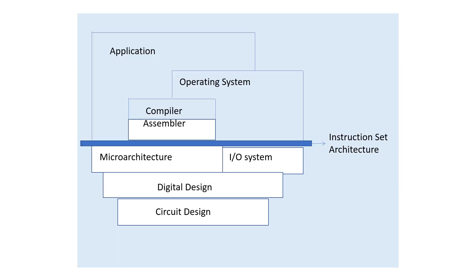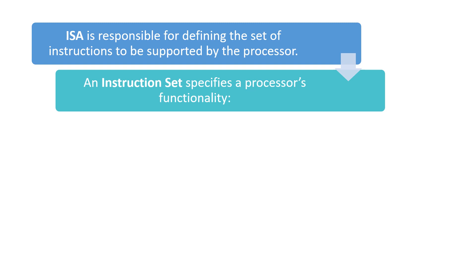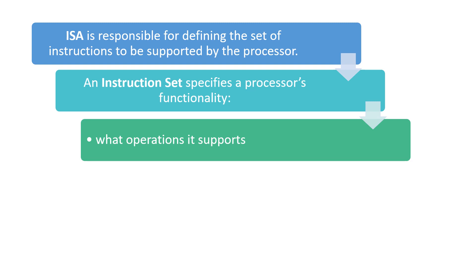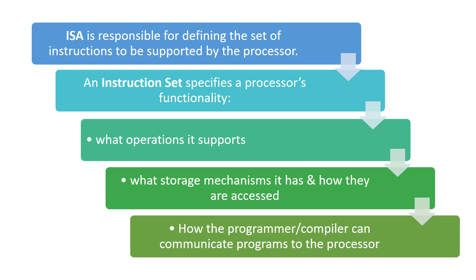This is the detailed diagram showing where instruction set architecture comes in. The ISA is responsible for defining the set of instructions to be supported by the processor — what operations it supports, what storage mechanisms it has and how they are accessed, and how the programmer or compiler can communicate programs to the processor. All of this is specified in the instruction set.